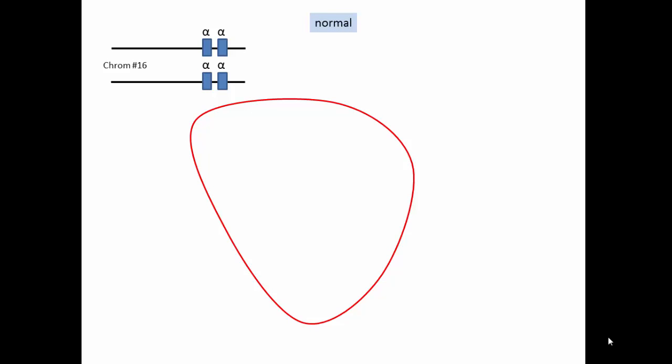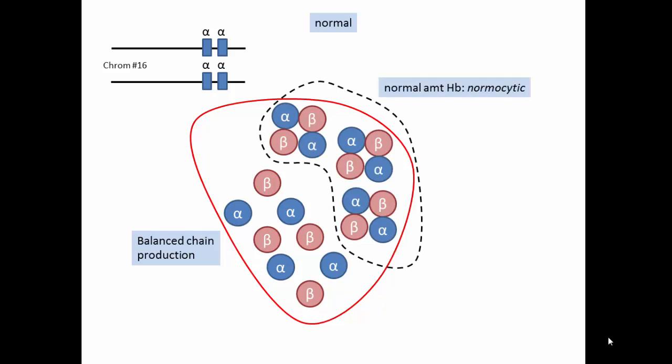Most people have four alpha genes, balanced alpha and beta globin production, and normal sized cells with the normal amount of hemoglobin per cell.